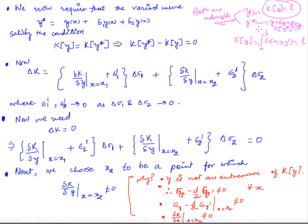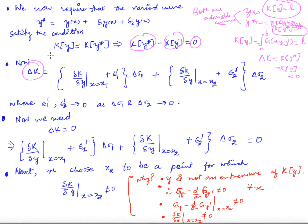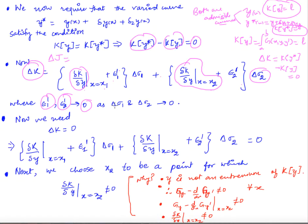We want k(y) = L and k(y*) = L, which means that δk = k(y*) - k(y) = 0. We can use the variational derivative definition to write δk, just as we wrote δJ. So δk will be the variational derivative of k with respect to y at x₁ plus ε₁' times δσ₁, plus the variational derivative of k with respect to y at x₂ plus ε₂' times δσ₂, where ε₁' and ε₂' go to 0 as δσ₁ and δσ₂ go to 0.